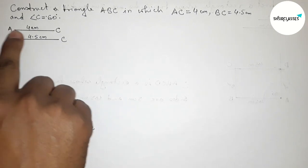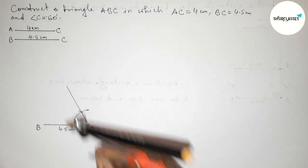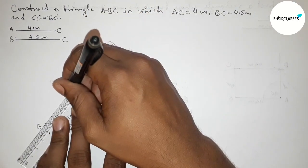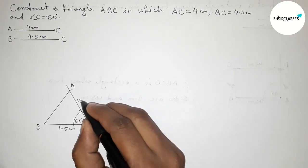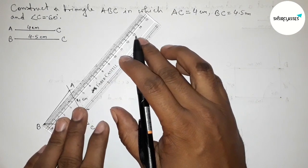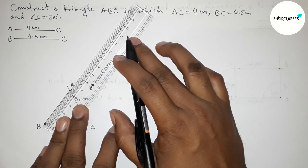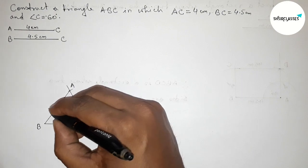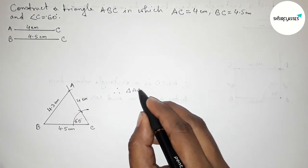Next, taking the length AC equals 4 centimeter with the help of compass. Putting the compass on point C and cutting the arc on the 60 degree angle line. Marking point A. Now joining A and B to get triangle ABC. AC equals 4 centimeter. Measuring AB with the scale — AB is approximately 4.3 centimeter.